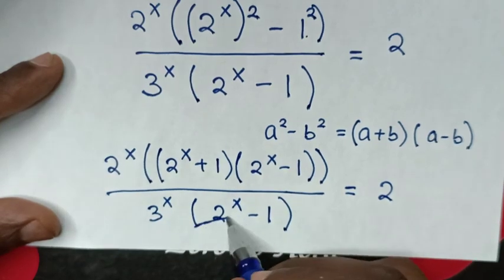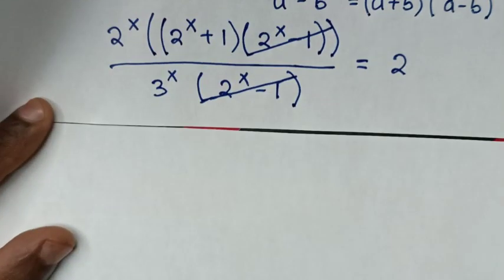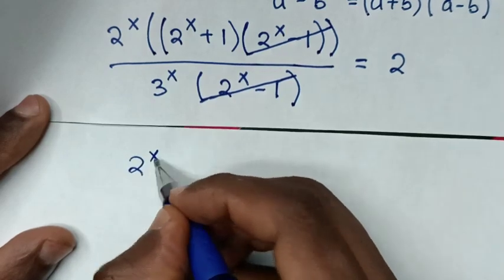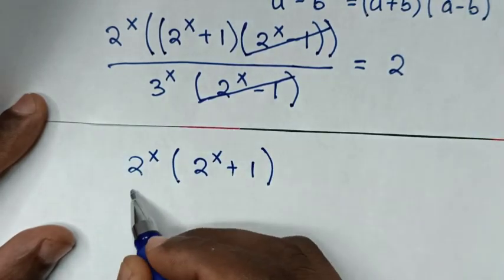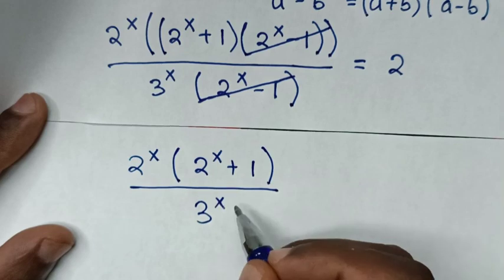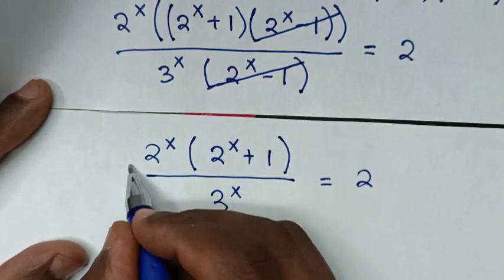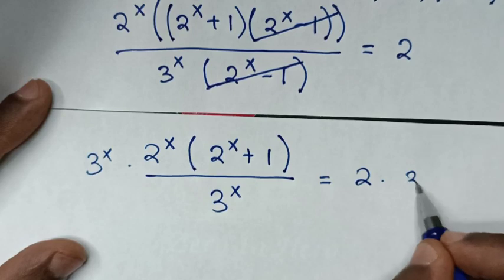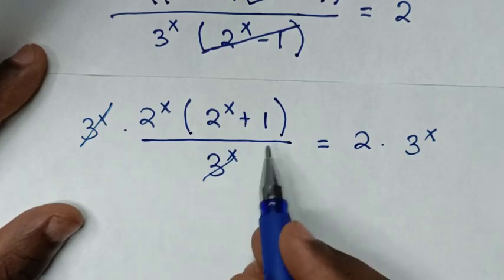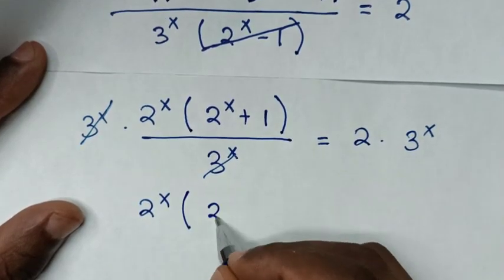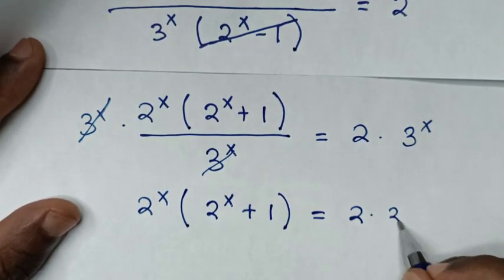We simplify by cancelling 2^x from numerator, and (2^x minus 1) cancels from numerator and denominator. Then multiplying both sides by 3^x, we get: 2^x times (2^x plus 1) equals 2 times 3^x.